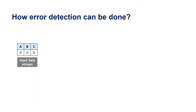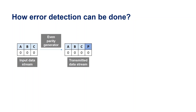Let us consider that an even parity generator scheme was used at the transmission end. This means the transmitted data stream will have an even number of ones. For input data stream A equals 0, B equals 0, and C equals 0, the transmitted data stream using an even parity generator will be A equals 0, B equals 0, C equals 0, and P equals 0. The parity bit P is appended at the end of the input data stream before transmitting over the channel. Let us assume noise is added during transmission, changing the parity bit to P equals 1 in the received signal, resulting in an error.